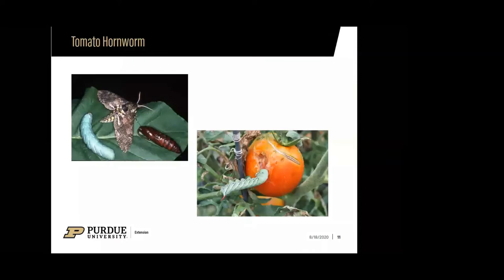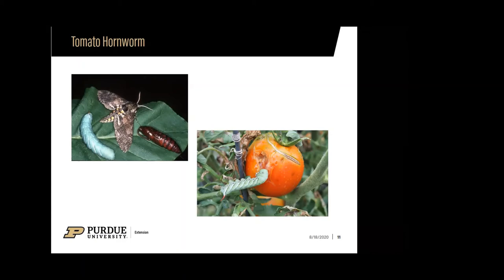Tomato hornworm is one of the most well-known garden pests. Most of the time we see defoliation before any fruit damage, and they need to be controlled because they can be totally devastating in a pretty quick time frame. The good news is they only have one generation per season, which makes them relatively easy to control once we know we have them. This underscores the need for daily walkthroughs in your garden.